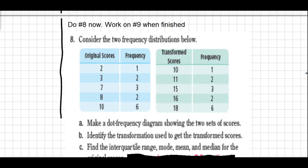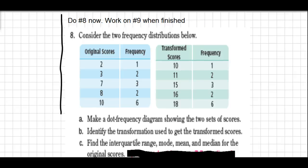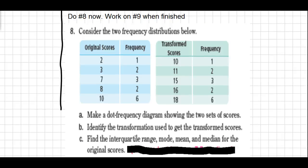So now let's work on number eight from the homework. First thing students are going to have to do is make a dot plot of the original scores here in blue and the transformed scores here in green. Students should take a moment to do that now on their own - they will appear in the video shortly.